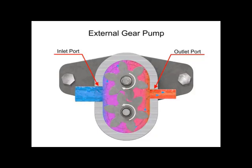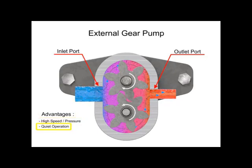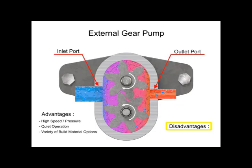The advantages of external gear pumps are their high speed and pressure, relatively quiet operation, and that their design accommodates a wide variety of materials. Disadvantages include bushings in the liquid area can become worn and that they have fixed end clearances.